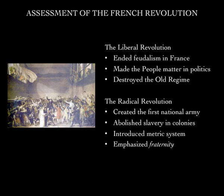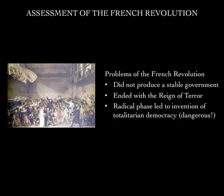The liberal period was followed around 1792 through 1794 or 1795 by the radical phase of the Revolution. The radical phase saw the creation of the first national army in Europe. The radicals coined the idea of a nation at war, abolished slavery in the colonies, introduced the metric system, and placed a heavy emphasis on fraternity in the revolutionary slogan of liberty, equality, and fraternity — a concept that would lead in the 19th century to a new concept of nationalism. Effectively, the radical phase emphasized a strong belief in the sovereignty of the people and the idea that government existed solely by the will of the people.